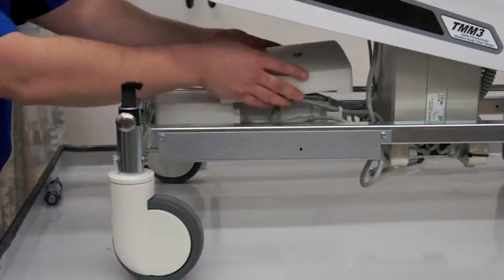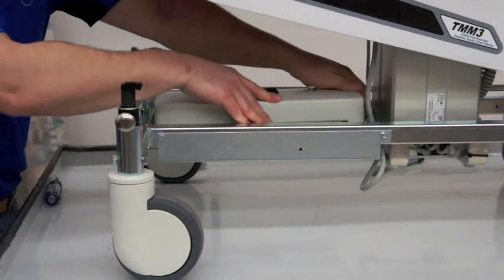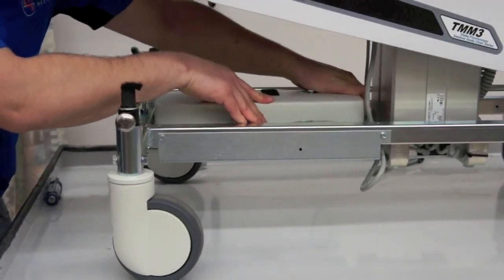Place the control box cover on the back end first, then push down on the front while pulling back. You'll feel the control box cover slide into place.